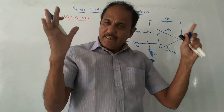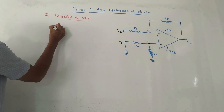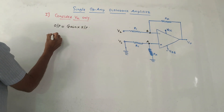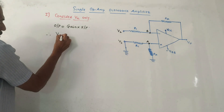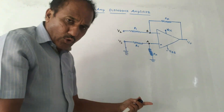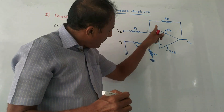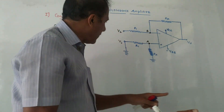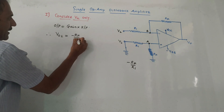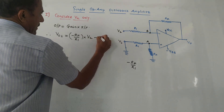Recalling the formula for the inverting amplifier: output equals gain times input voltage. I will denote the corresponding output voltage as V01. The gain of the inverting amplifier is −Rf/R1, so V01 = −(Rf/R1) × V2. This is equation number one, where we considered voltage source V2 only.